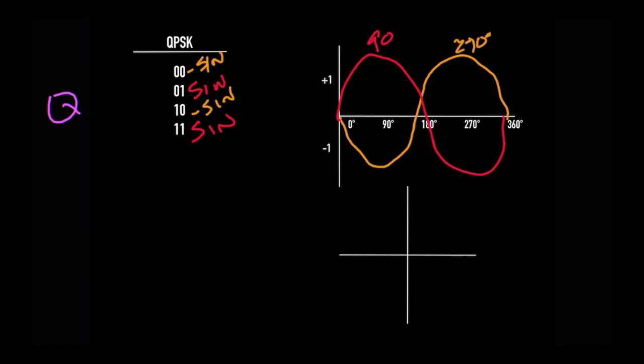But we also have a separate column, the column on the left. These are going to have the 1s will have a cosine, and the 0s will have a minus cosine. A cosine starts up here and drops down and comes back up, it peaks at 0. And a minus cosine is the opposite, and it peaks at 180.